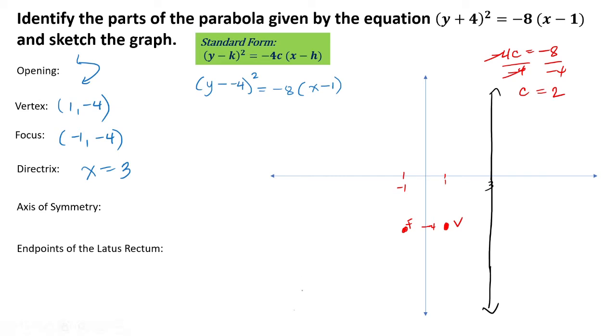For the axis of symmetry, here, it passes through the vertex and the focus, and this is perpendicular to our y-axis. Therefore, this would be y is equal to negative 4.